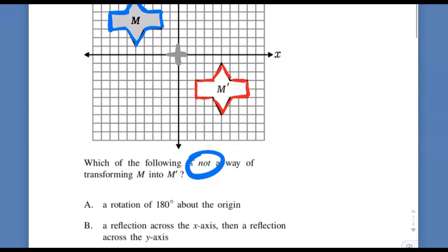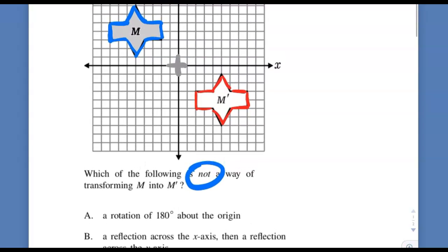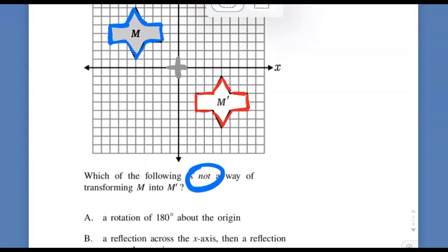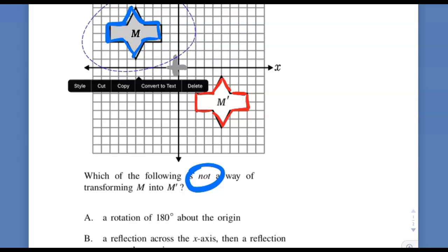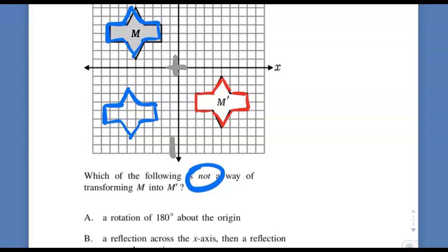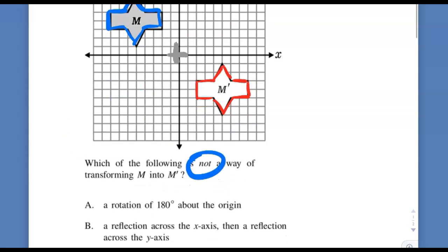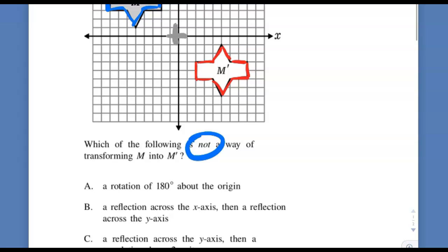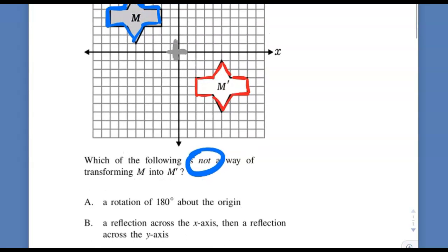A reflection across the x-axis then a reflection across the y-axis. If you reflect this over the x-axis, you end up right here. And then if you're reflected over the y-axis, you end up on the red one. So that one works.